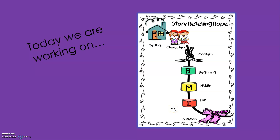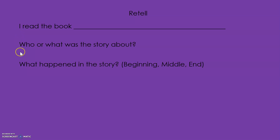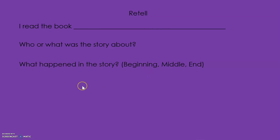Before we get started, let's take a look at these sentence starters or questions that will help us write a good retelling. First, we start with 'I read the book' — that's where we put the title, and it's very important. Who or what was the story about? That's where we'll talk about the characters, maybe a little problem or what they're doing, and then we'll give some more details about what happened in the story. We'll think about what happened in the beginning, the middle, and the end.